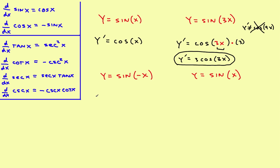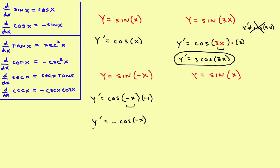Let's try this one. This is not just a simple positive x, so we have to use the chain rule again. Y prime: take the derivative of the outer part — the derivative of sine is cosine. Then rewrite the original inner part, then times the derivative of what's on the inside, which is negative 1. Bring the negative in front, and y prime equals negative cosine of negative x.